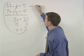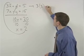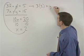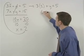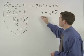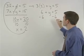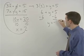This simplifies to 6 plus y equals 5, and subtracting 6 from both sides gives us y equals negative 1.